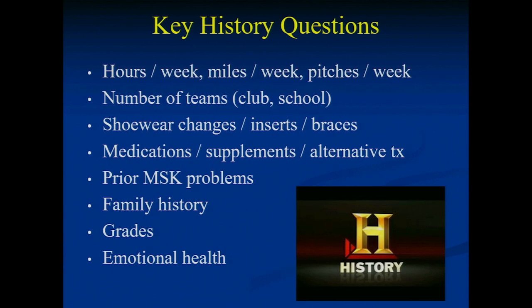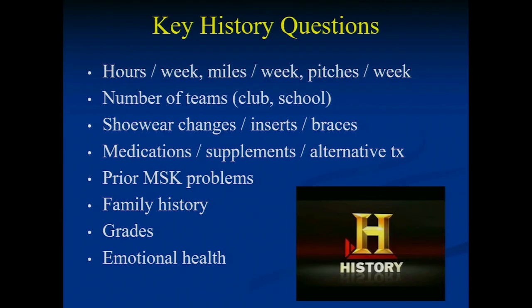Other key history questions: ask how many hours per week they're playing sports. A great study showed that if you do more hours per week than your age, there's about a 75% chance of significant injury — so a 10-year-old shouldn't be doing more than 10 hours of organized sports per week. For runners ask miles per week, for pitchers ask pitches per week. Also ask about teams, footwear, supplements, family history, grades, and emotional health.